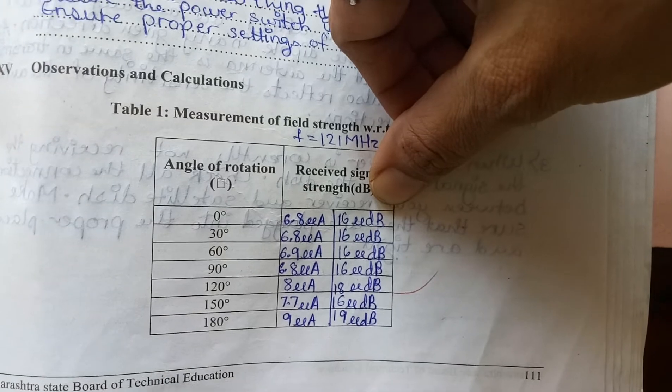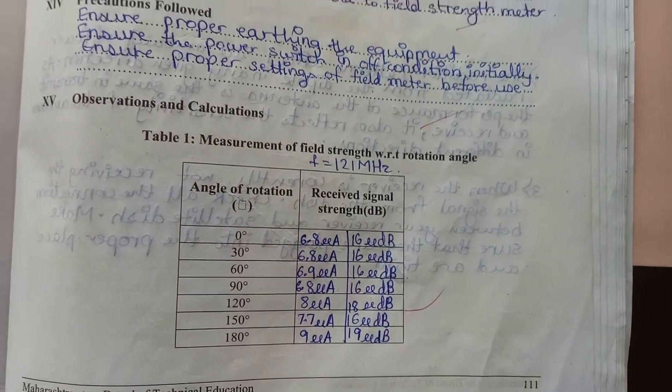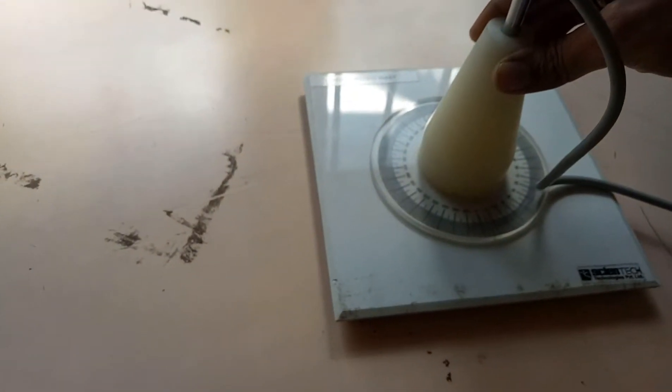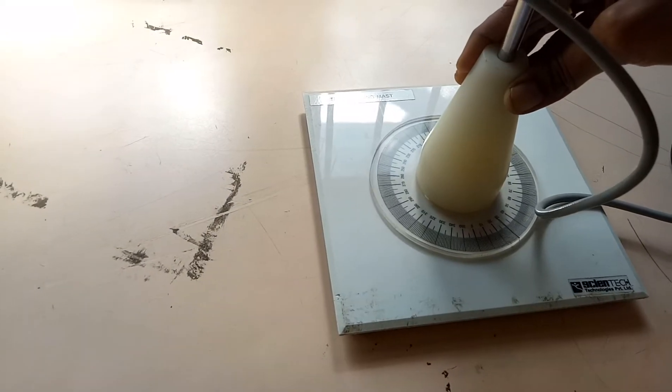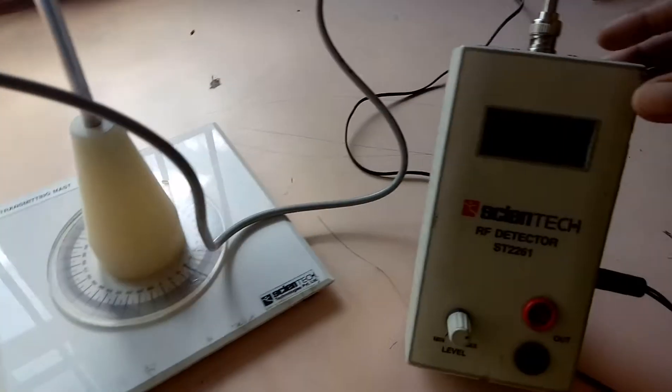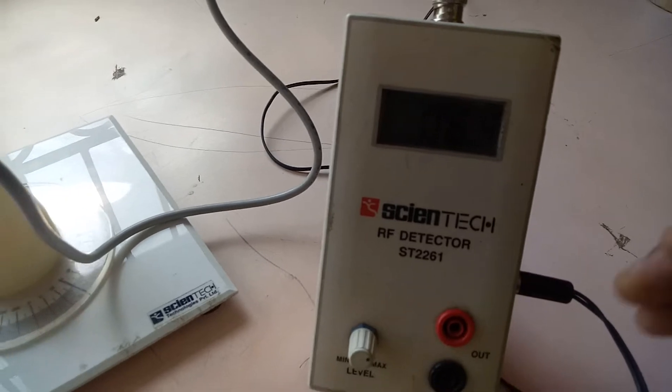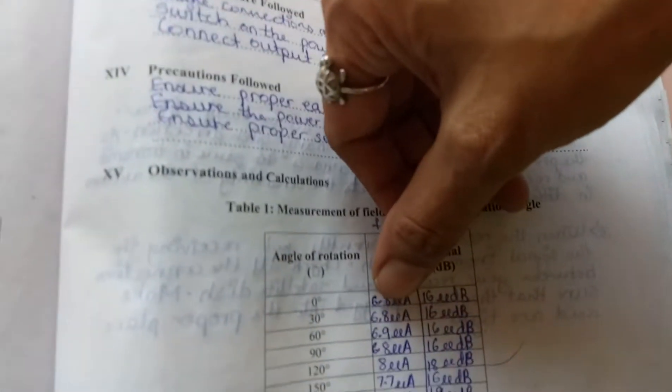Second step, angle is 30 degrees. I rotate this angle to 30 degrees. Again I measure the power, so it is 5.9.